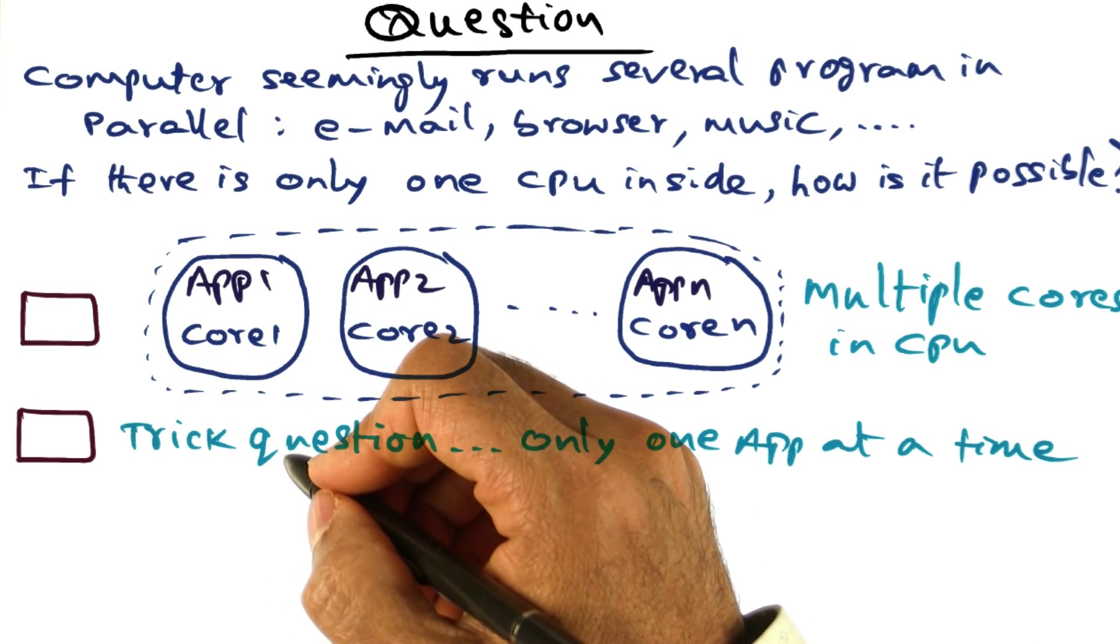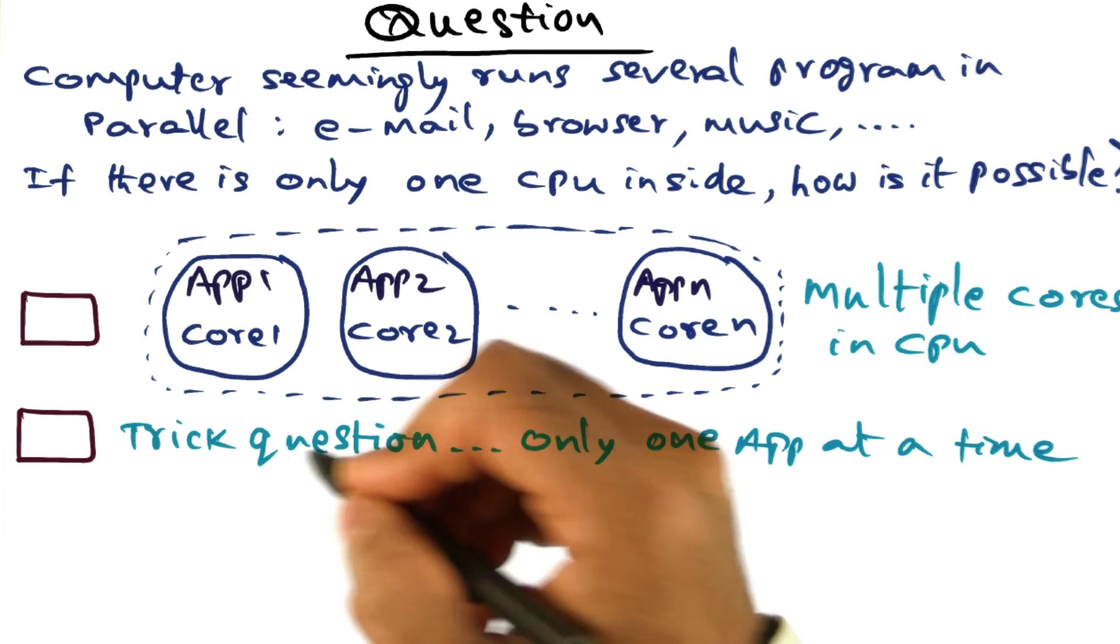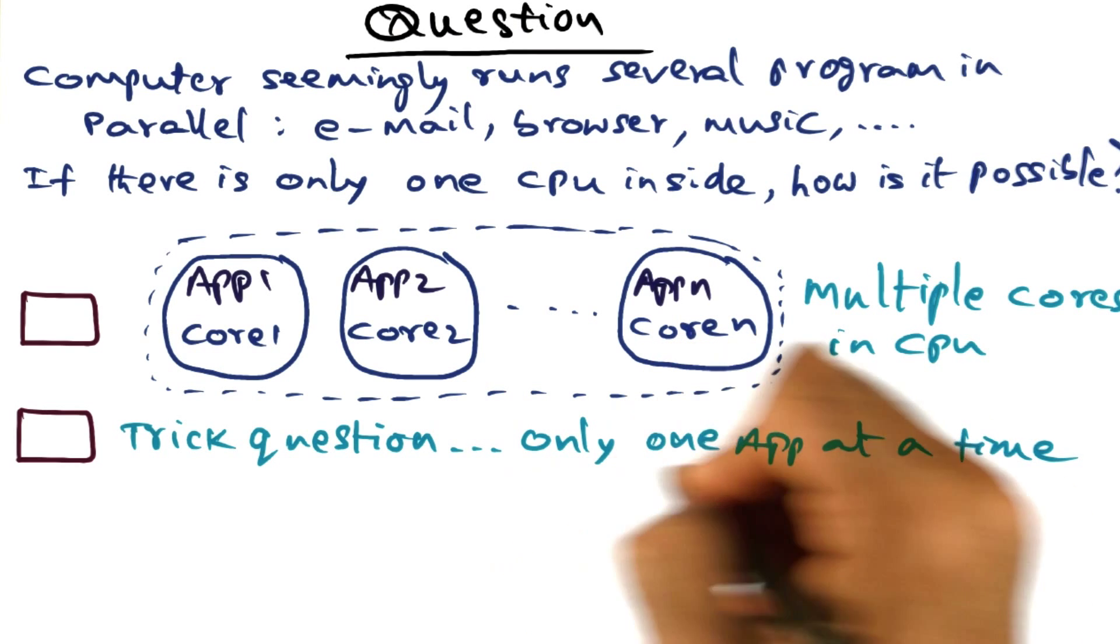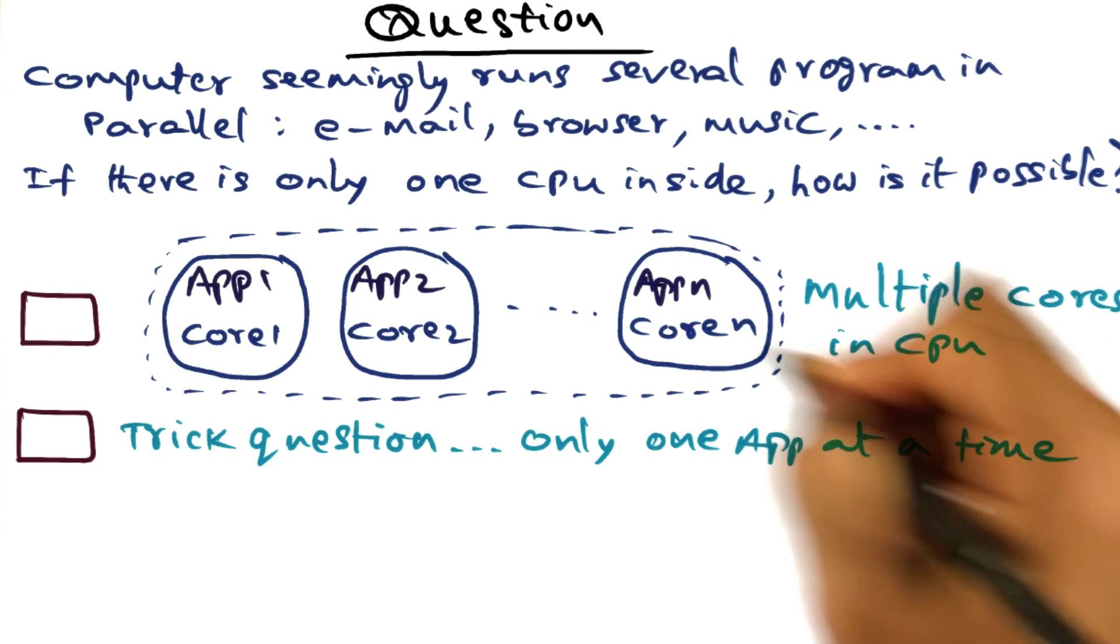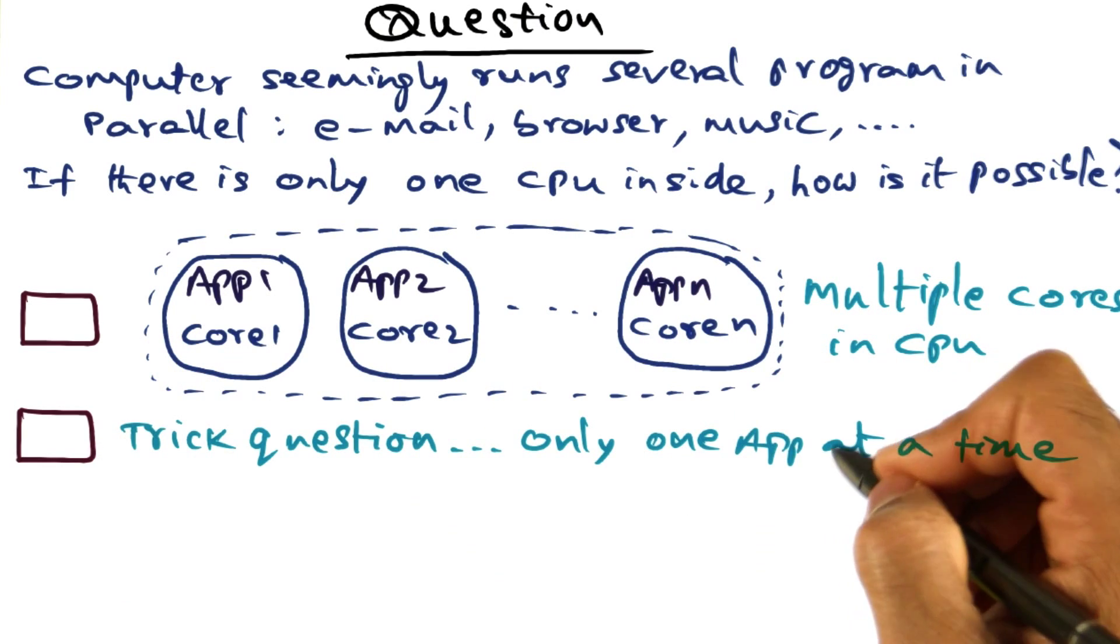The second choice is, I'm trying to trick you. It's a trick question—actually there's only one app running at a time, and the premise of the question itself is wrong. That's your second choice.